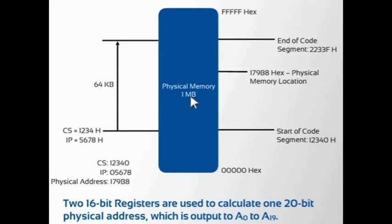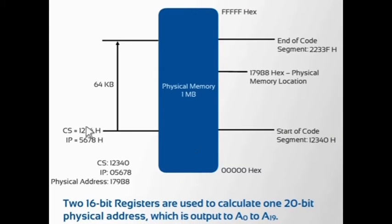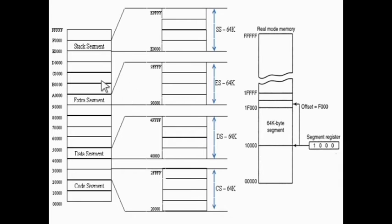In 8086 microprocessor architecture, the complete 1 MB memory is divided into 16 logical segments. Each segment contains 64 KB of memory. While addressing any location in the memory bank, the physical address is calculated from two parts: the first part is the segment address and the second is the offset. The segment registers contain 16-bit segment base addresses related to different segments — code segment, data segment,